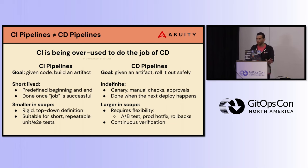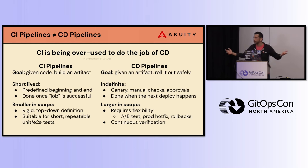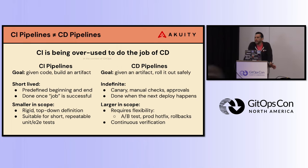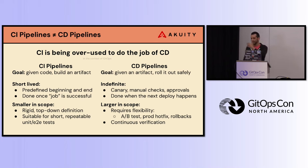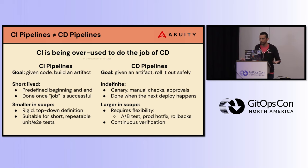In the CD pipeline, the goal is: given an artifact, roll it out safely. While CI processes are short-lived, CD processes are really indefinite — we don't really know. It may run really quick, or it may run for weeks. I've worked with folks that run a canary for four or five weeks before they know when to promote it. It's larger in scope and requires hot fixes, A-B testing, and continuous verification. Even when you deploy something to production, that's not really the end — it only ends when the next deployment happens, because you don't stop monitoring it.